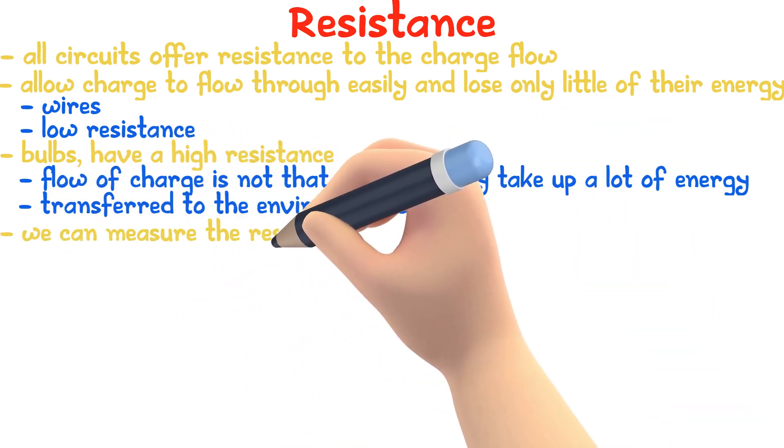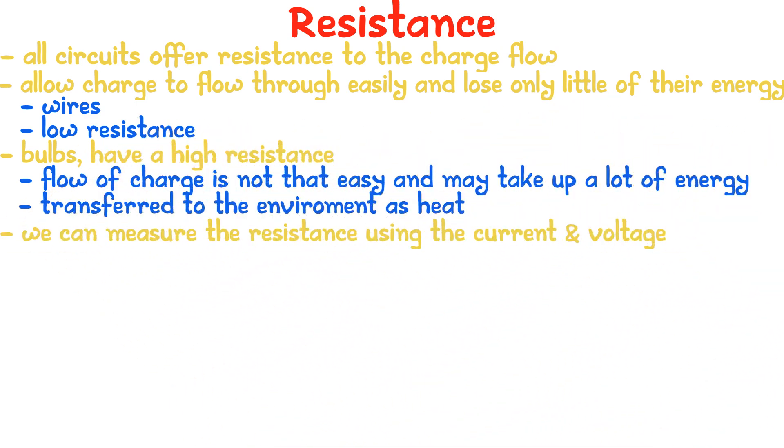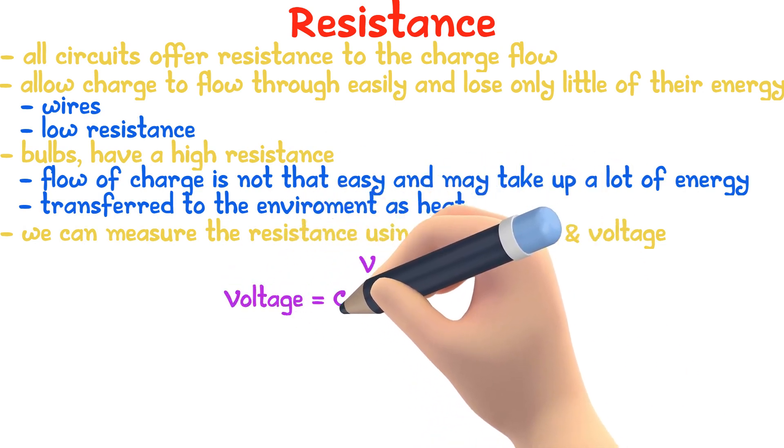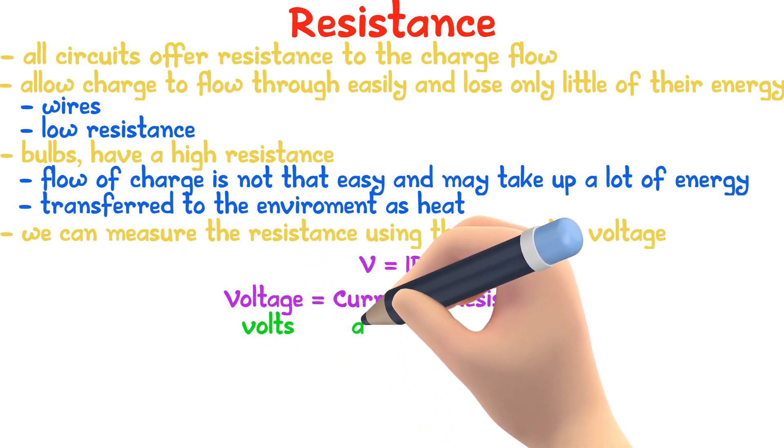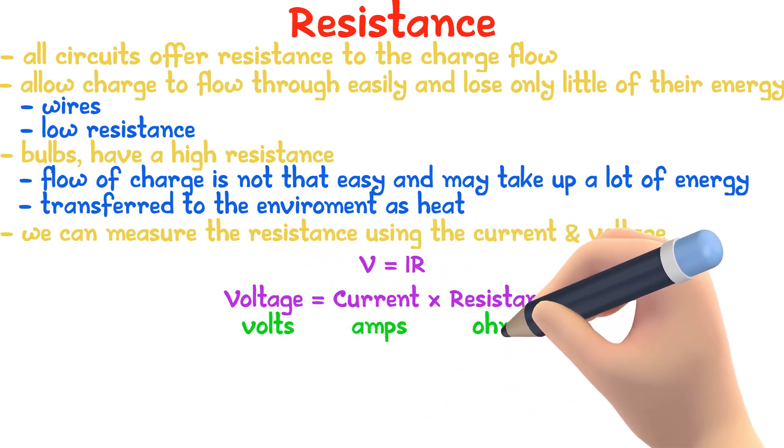We can measure the resistance by using the current and the voltage of the component using the equation V equals IR, or voltage equals current into resistance. Resistance is measured in ohms, current in amps, and voltage in volts.